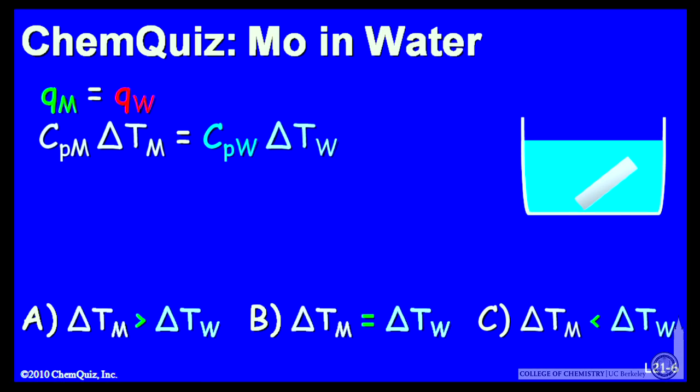Now, the amount of heat transferred is the same, but the heat capacities are not the same. So that means these temperature changes don't have to be the same. So let's look at the heat capacity of the metal.